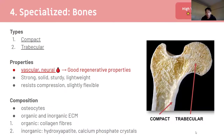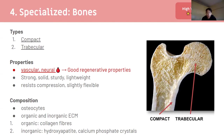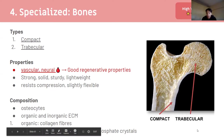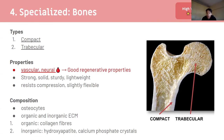Bone is also a specialized connective tissue. Two types: compact (solid) and trabecular (honeycomb structure, lots of empty space). Unlike cartilage, bone is vascular and neural — it has good regenerative properties, which is why a broken bone can heal itself in a cast over a few weeks. Bone is strong, solid, sturdy, and the trabecular structure makes it lightweight. It resists compression and is slightly flexible.